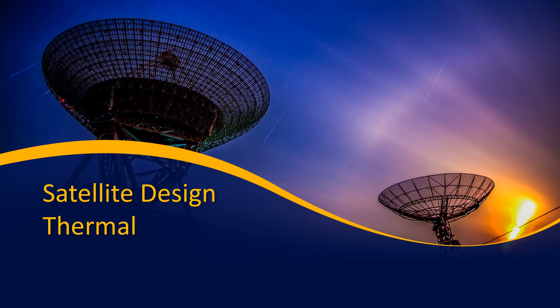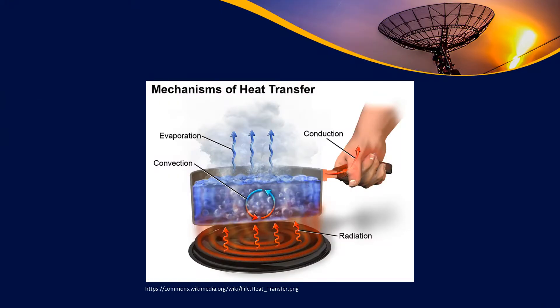There are three primary methods of heat transfer. First, there's radiation — where you have something hot that you can feel from a ways away, even though you're not touching it and even though the air around you isn't warm. You feel this with particularly hot things, and you can feel it when you walk outside and feel the sun.